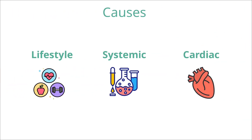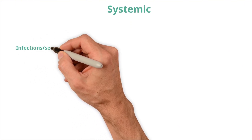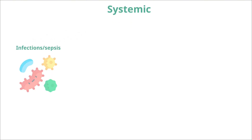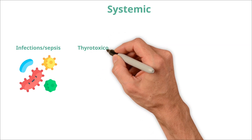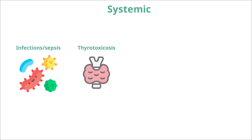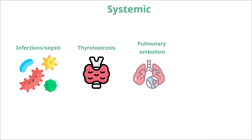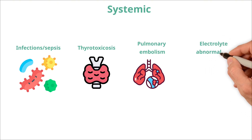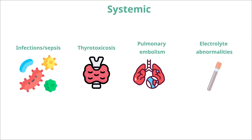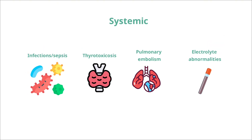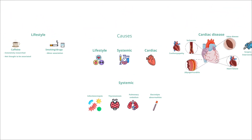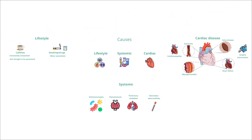There are also a number of systemic diseases that can trigger episodes of AF, including acute infections and sepsis, thyrotoxicosis, pulmonary embolism, and electrolyte abnormalities, especially hypokalemia and hypomagnesemia. Not all patients with AF have risk factors, but most will have some.